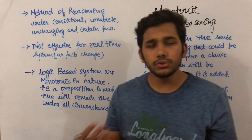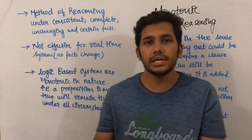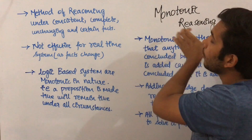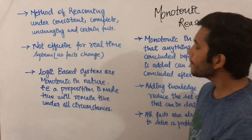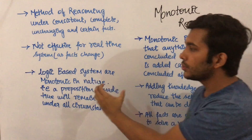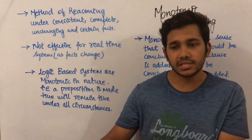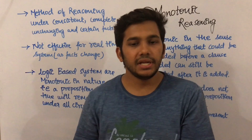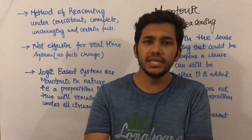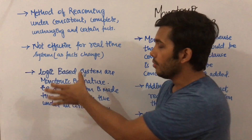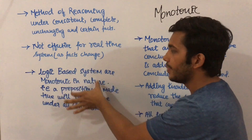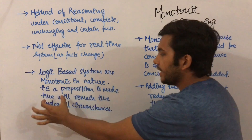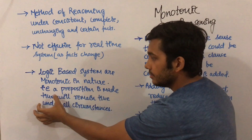Monotonic reasoning is not effective for real-time systems because in real-time systems facts change generally. For real-time systems, non-monotonic reasoning is used. Monotonic reasoning is used for logic-based systems where certain facts are given and these facts are either true or false — like 'Tarun Kumar got placed in Kent Aro' is either true or false.